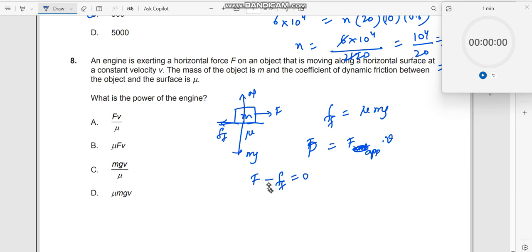The reason why it is 0 is because the particle is moving at uniform velocity. M into A, A is equal to 0 here. F minus FF equals 0, or F is equal to the frictional force.